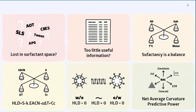Here's the problem. We want to choose the right surfactant for a new formulation, but which one do we choose? Do we choose SLS or CAT5 or AOT or Tween? The problem is we don't know which ones of these to choose rationally, because we're lost in surfactant space without a compass.